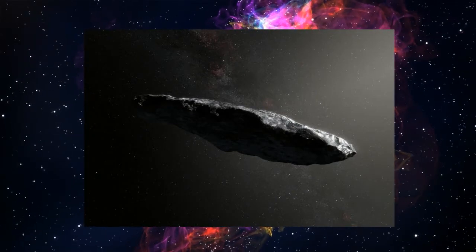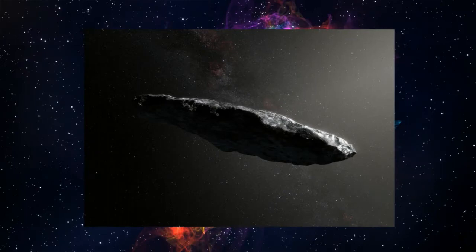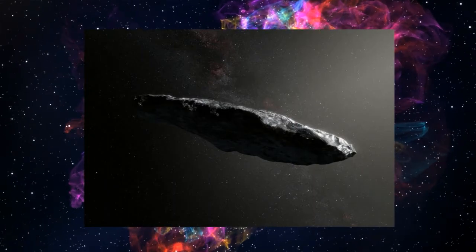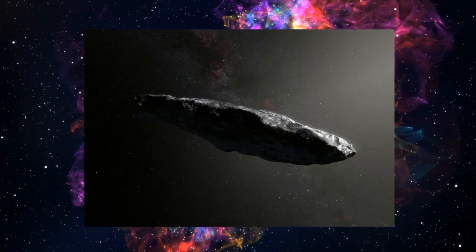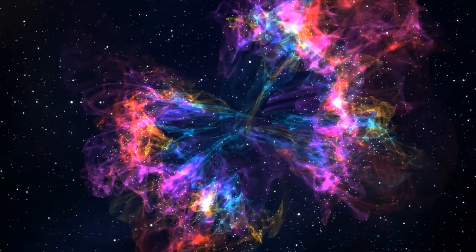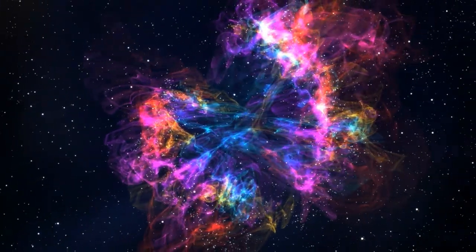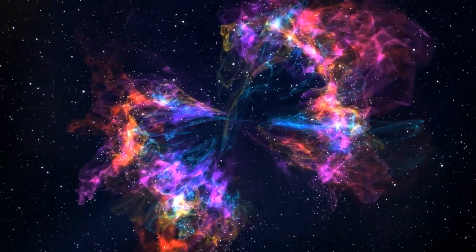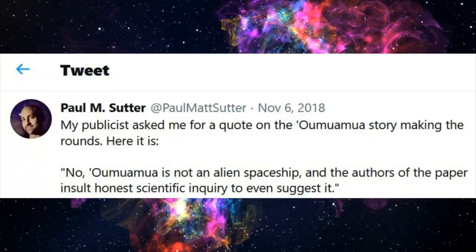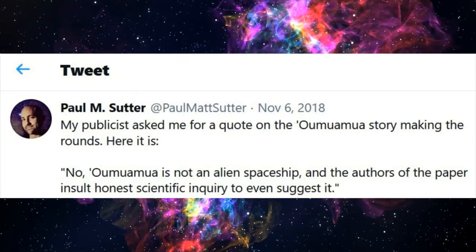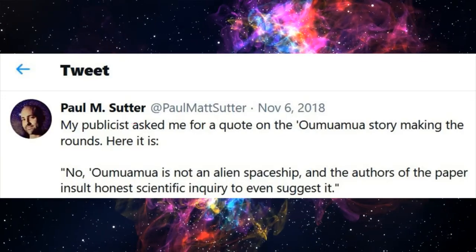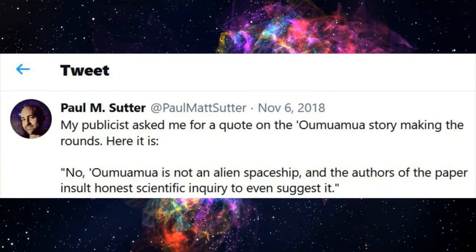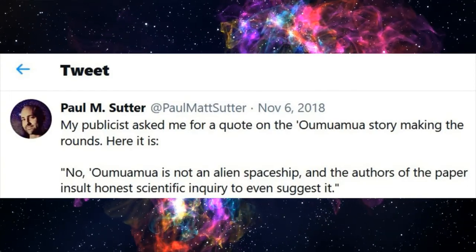Well, that then made all the headlines until astronomers piled on and said, Dude, you can't say the A word. While astronomers tried to scan it for alien signals, they got crickets. That enraged some scientists because it lends credibility to the idea that aliens exist. More specifically, here is astronomer Paul M. Sutter on Twitter who said, No, Oumuamua is not an alien spaceship. And he goes on to state that Avi Loeb and his fellow authors insult honest scientific inquiry to even suggest it.